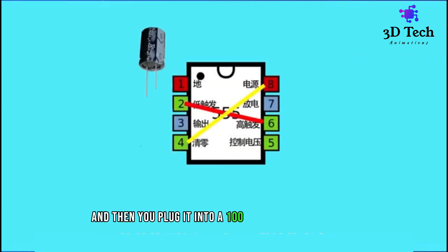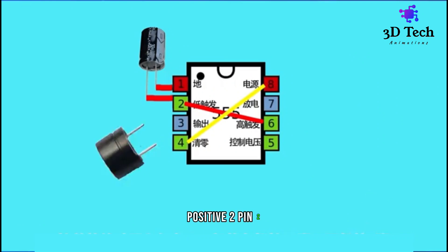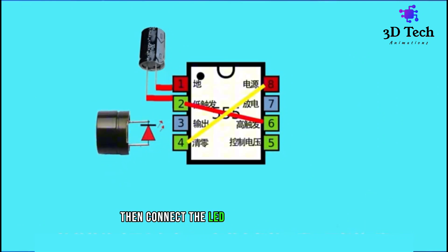And then you plug in a 100 microfarad capacitor. Negative to pin 1, positive to pin 2. Then connect the LED and buzzer in parallel. Positive connected to 4 pin and negative to 3 pin.